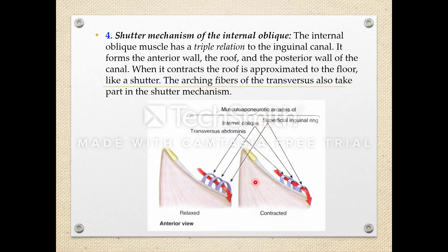Mechanism number two: the shutter mechanism of the internal oblique. The internal oblique has a triple relation to the inguinal canal — it forms the anterior wall, the roof, and the posterior wall. When it contracts, the roof is approximated to the floor, just like a shutter. The arched fibers of the transversus abdominis also help in the shutter mechanism.